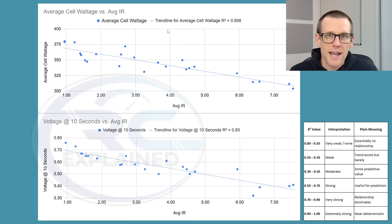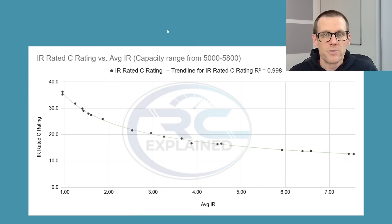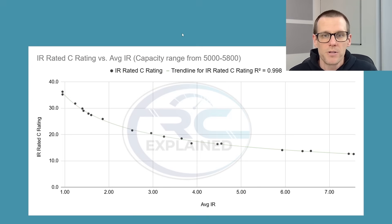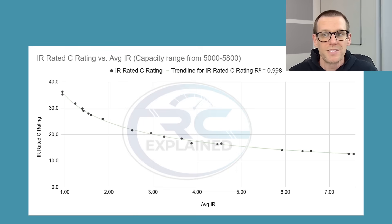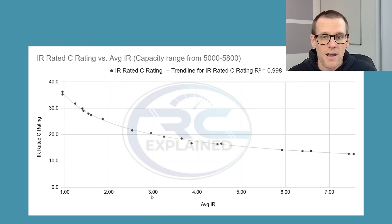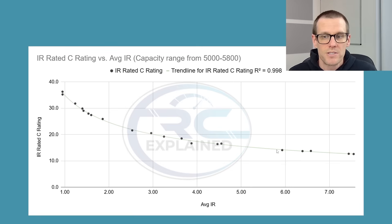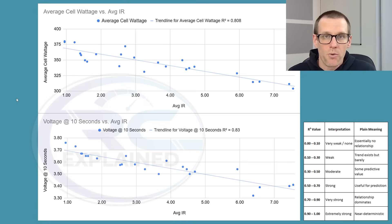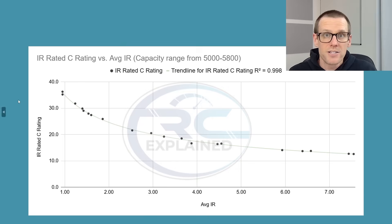Let's now take a look at the next chart. Here we have the internal resistance rated C rating versus the average internal resistance. A formula is used to determine the average internal resistance and convert that into a C rating. The R² value is essentially one here, which makes sense because this is a formula that takes average IR and converts it into an IR-rated C rating. You can see the trend: as we decrease in resistance moving right to left, we get better internal resistance rated C ratings.